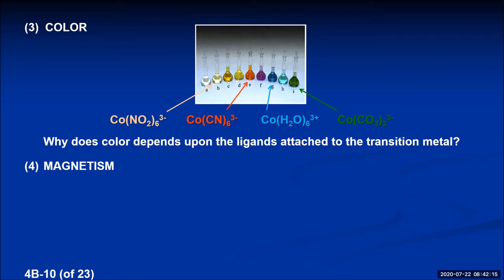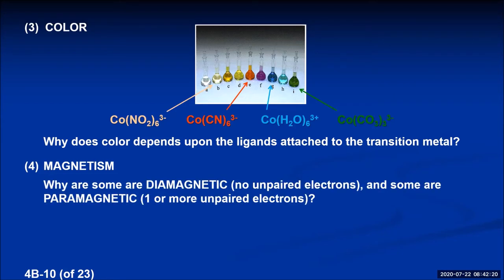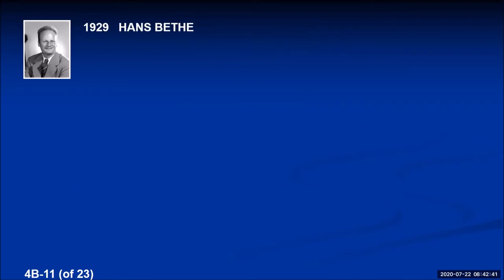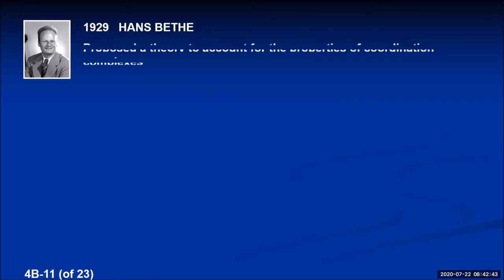Finally, coordination complexes experience magnetism. Some are paramagnetic, some are diamagnetic. We're going to see if we can explain why some are diamagnetic — meaning they have no unpaired electrons — and why some are paramagnetic, meaning they have at least one unpaired electron. An explanation for these properties was proposed in 1929 by Hans Bethe, who proposed a theory called crystal field theory.